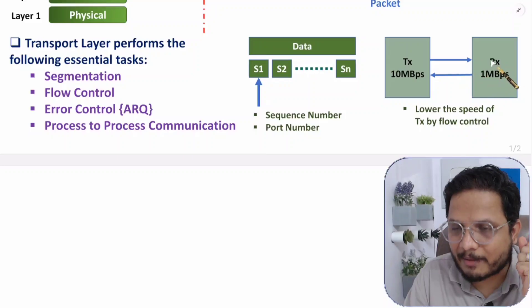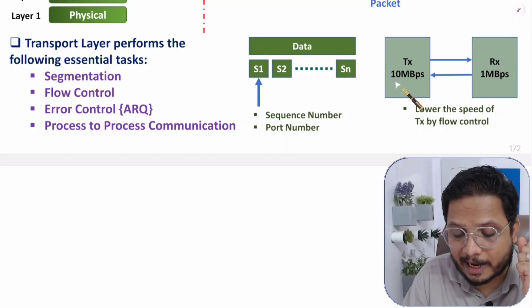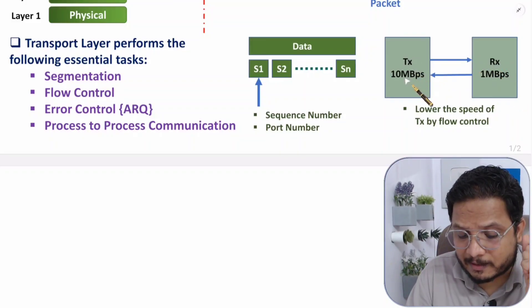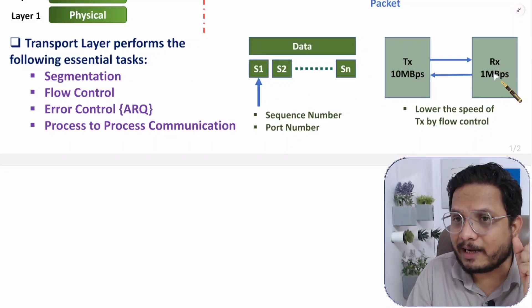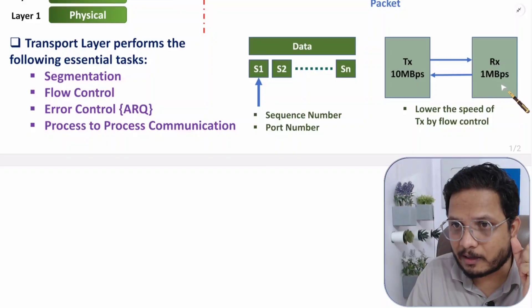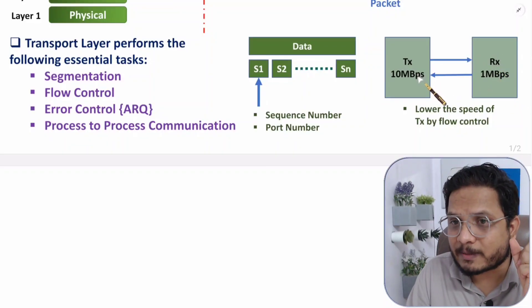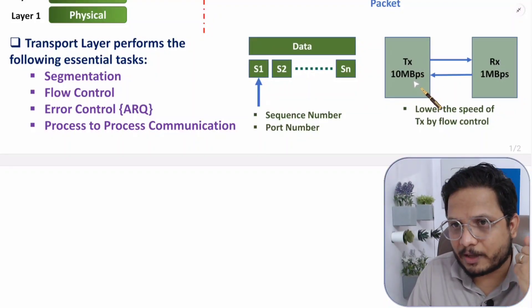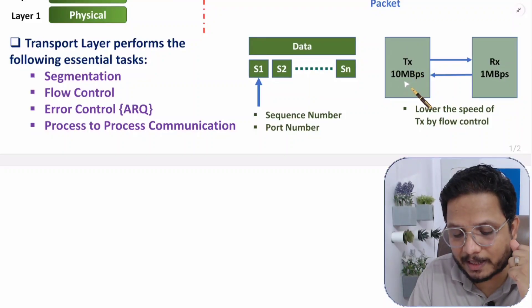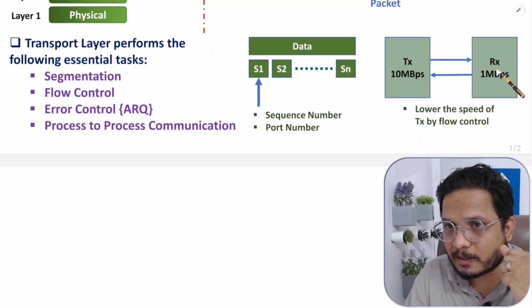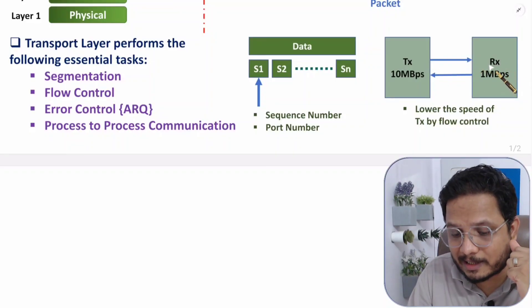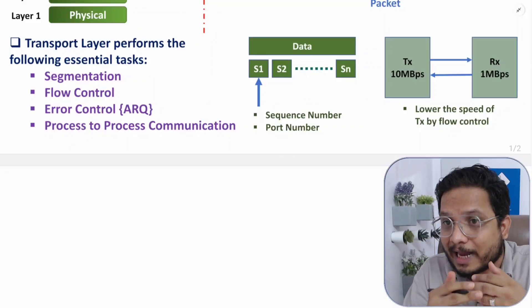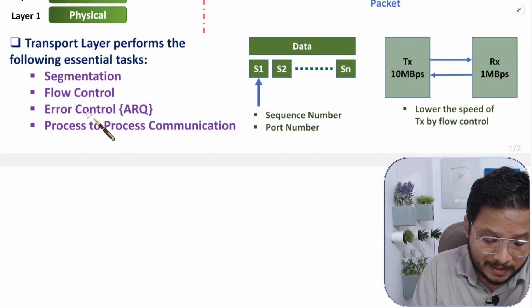For example, here we have a transmitter sending data at 10 Mbps, but the receiver can handle data at only 1 Mbps. Since the transmitter is sending faster than the receiver can handle, the receiver gives feedback to the transmitter to lower the transmission speed. Conversely, if the transmitter sends at 1 Mbps but the receiver can handle up to 10 Mbps, the receiver can give feedback to increase the speed. This flow control is done at the transport layer.